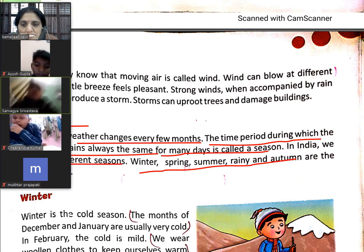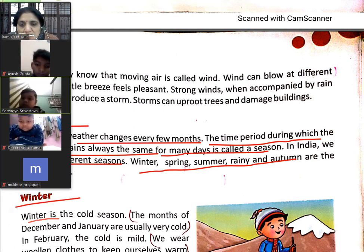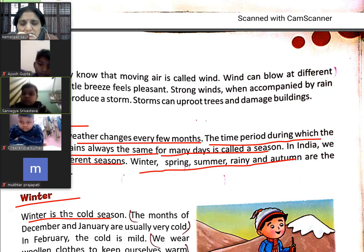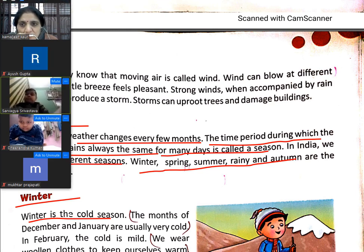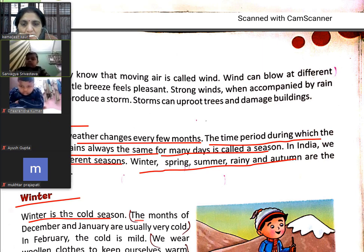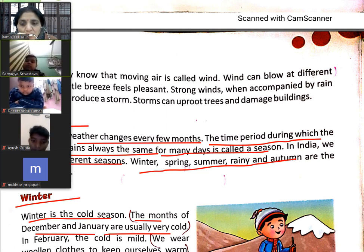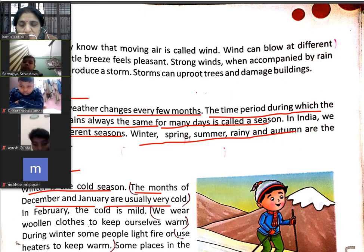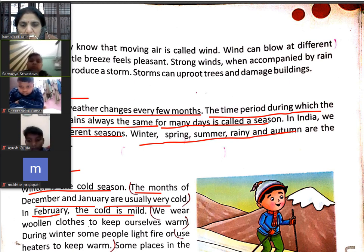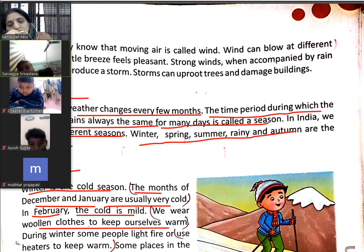First of all, we are going to start with the season winter. Winter is the cold season. At this time, we are also in winter season. The months of December and January are usually very cold. In February, the cold is mild. We wear woolen clothes to keep ourselves warm.